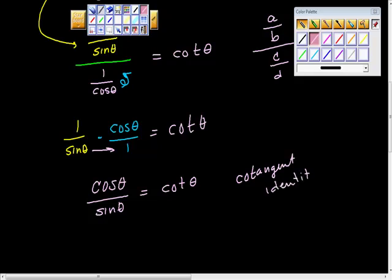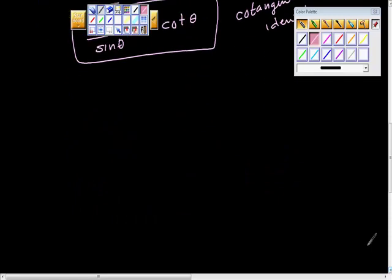So this is cotangent identity. And if you're wondering why I keep writing these things down, it's because your professor may say to you, well, what's your proof that this is true? Well, this is an established identity. So we're taking identities that are not established, and we're turning them into proven acceptable.